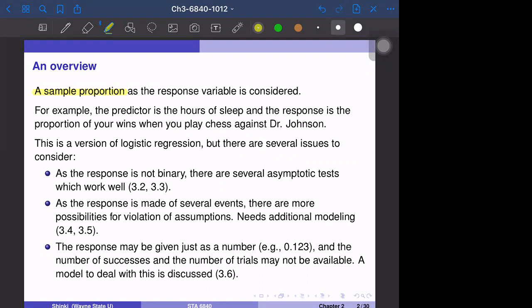For example, the predictor of the data set is the hours of sleep in the previous night, and the response variable is the proportion of your wins when you play chess games against Dr. Johnson. So based on the hours of sleep, such as 7 hours, you win maybe 3 out of 10. Or you sleep only 5 hours, then you win only maybe 1 out of 15, and so on.